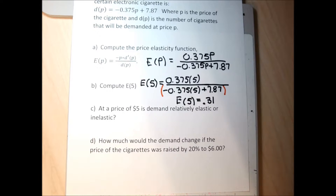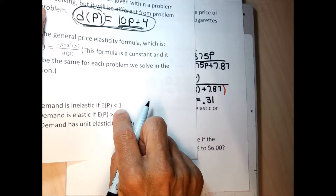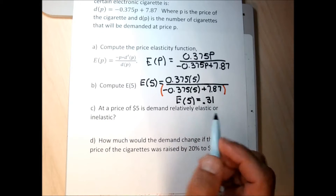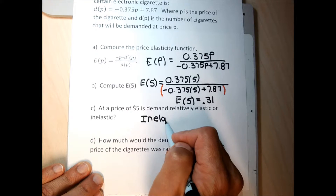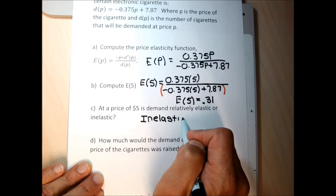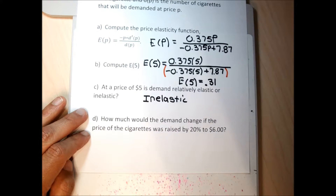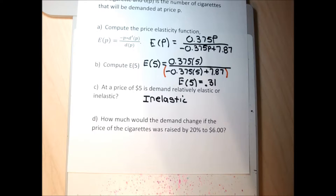A 20% price increase will cause demand to drop 6.2%. That's relatively inelastic, because if demand were elastic a 20% price increase would cause more than a 20% demand decrease. So for every problem: Part A — get the price elasticity function with negative P times the derivative of D(P) in the numerator and D(P) in the denominator. Part B — plug in a price, get a result. If bigger than one, elastic; if less than one, inelastic. Part C — multiply the percent price increase as a decimal times the elasticity number to find how much demand drops.